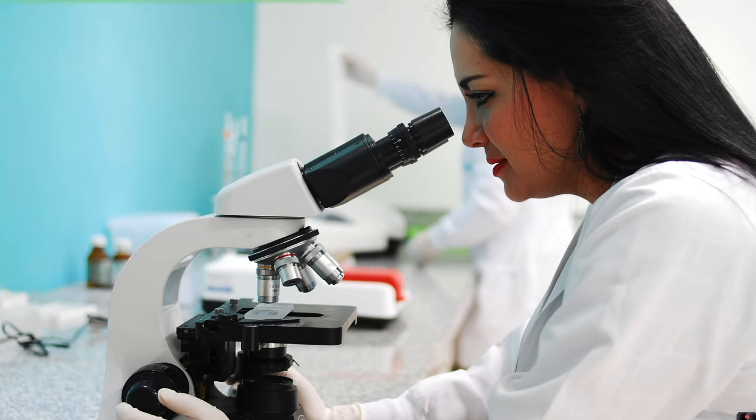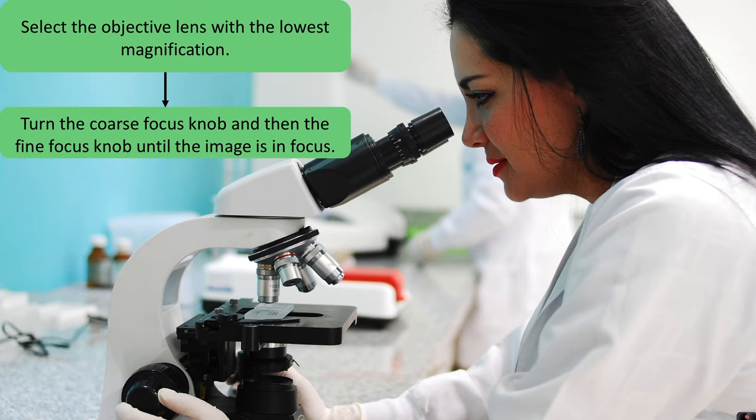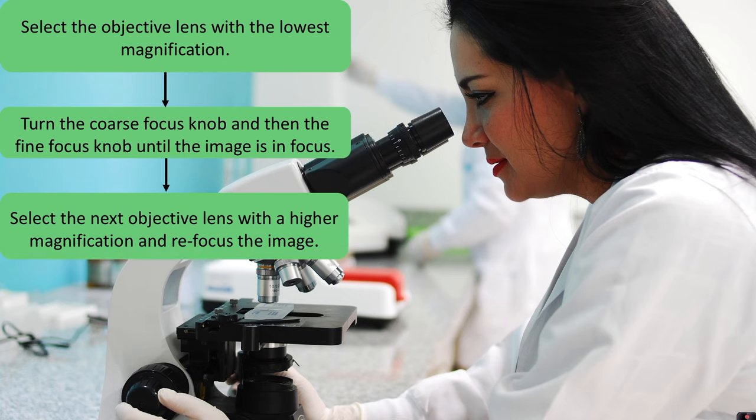In order to view your image you would first select the objective lens with the lowest magnification. Turn the coarse focus knob and then the fine focus knob until the image is in focus. And then select the next objective lens with a higher magnification and refocus the image. And you would repeat this until you can view your object at the highest magnification.